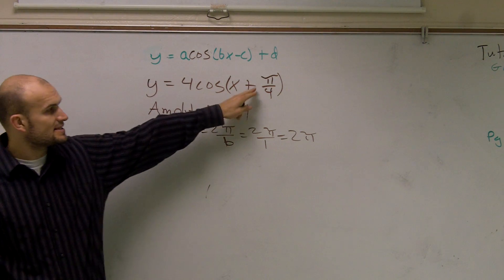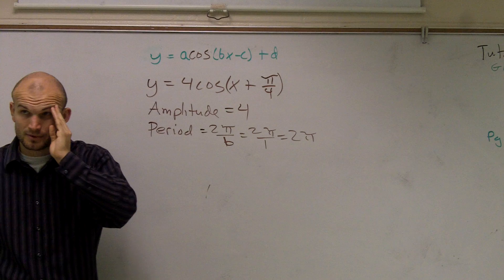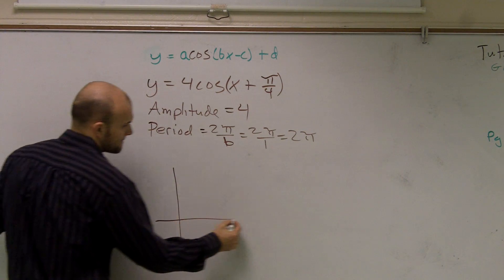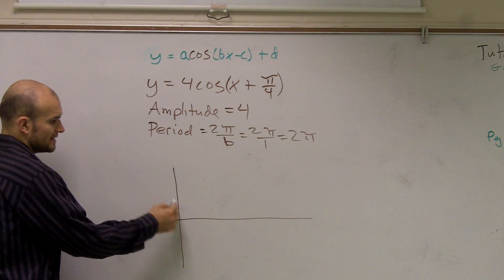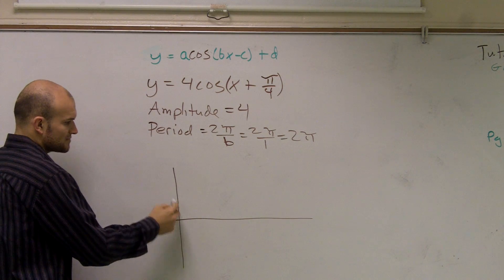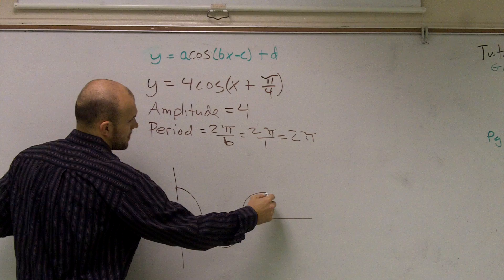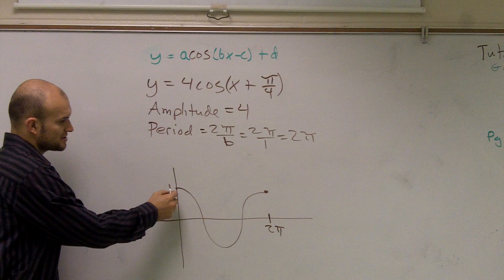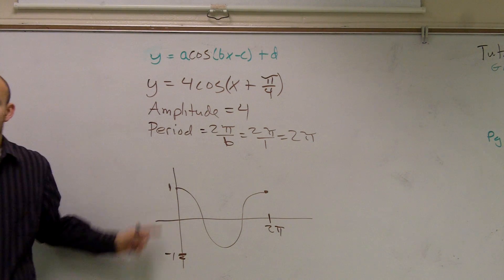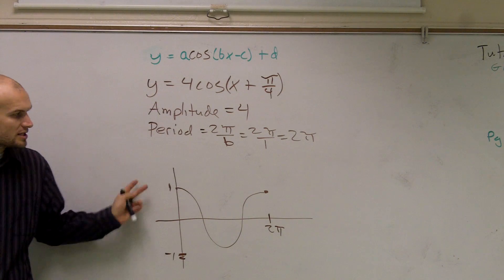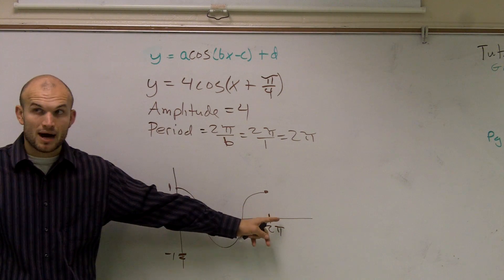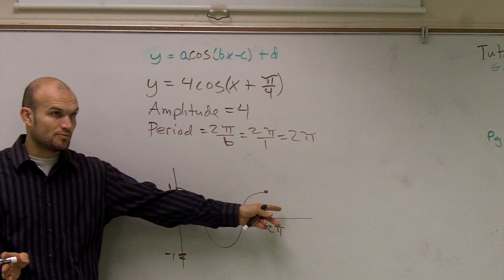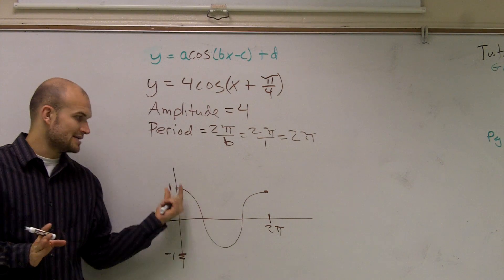The last thing to notice is there is a horizontal shift of pi over four. If we remember, the graph of cosine — without looking at the amplitude — crosses at one and goes down to negative one. The graph of cosine has endpoints at zero and two pi. That's your initial first period of your cosine graph. One cycle is contained between zero and two pi.